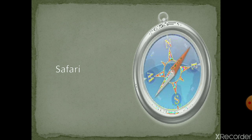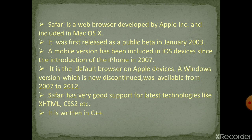Safari is a web browser developed by Apple. Its first beta version was released on 7th January 2003 on the company's operating system. A mobile version has been included in iOS devices since the introduction of the iPhone in 2007. It is the default browser on Apple devices. A Windows version was also available, but only from 2007 to 2012, and it is now discontinued.